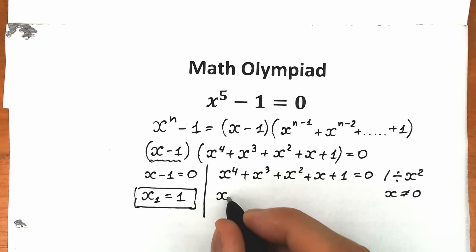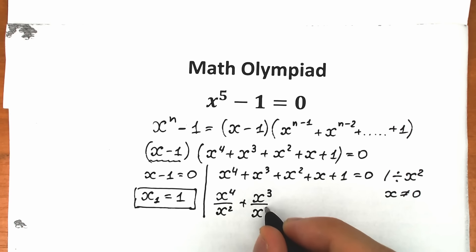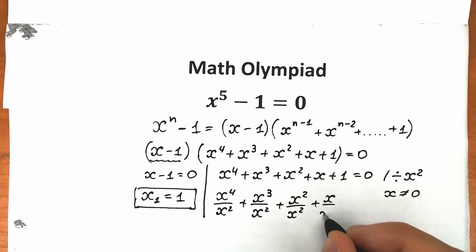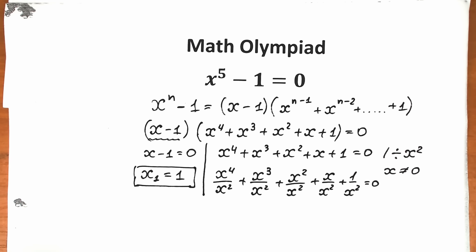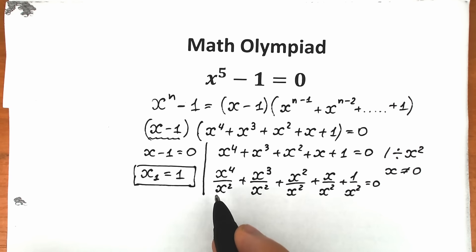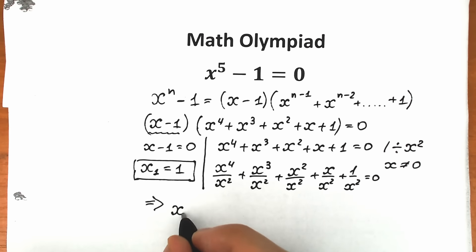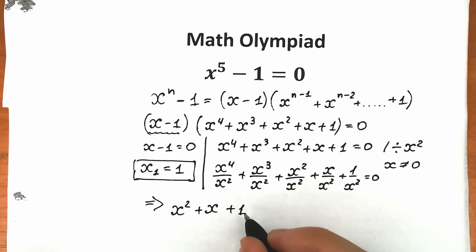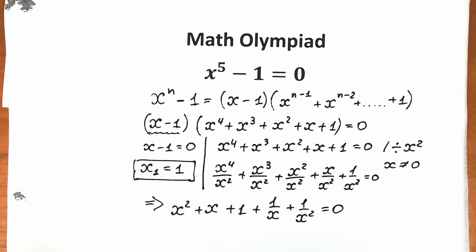After dividing by x squared, we have: x to the fourth over x squared, plus x cubed over x squared, plus x squared over x squared, plus x over x squared, plus one over x squared, all equal to zero. Simplifying using power rules, this becomes x squared plus x plus one plus one over x plus one over x squared, equal to zero.